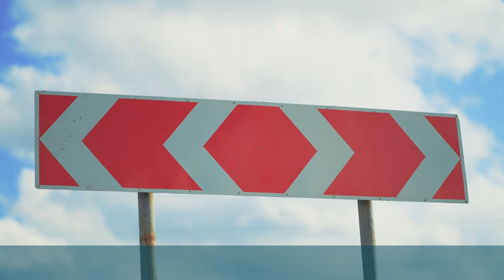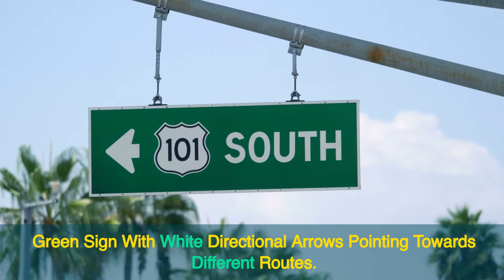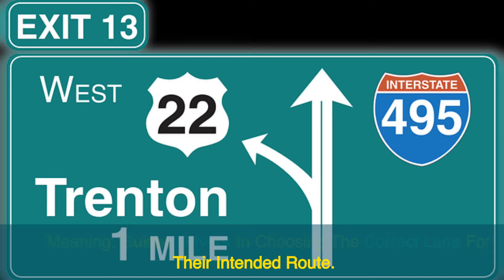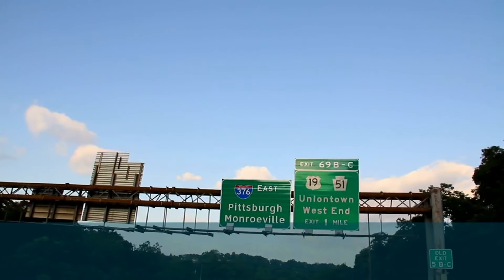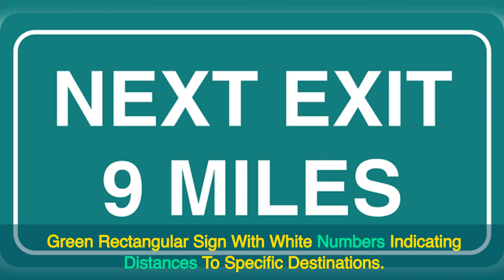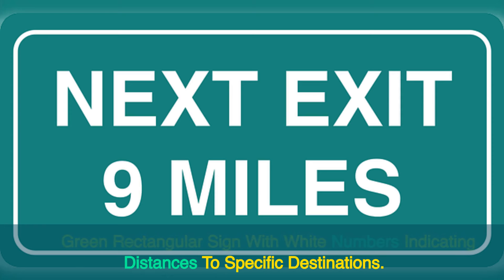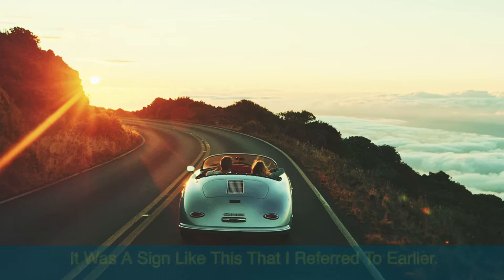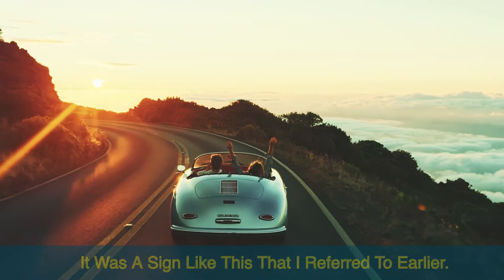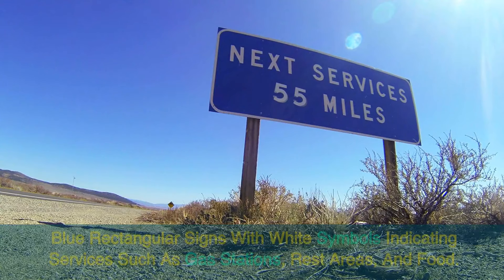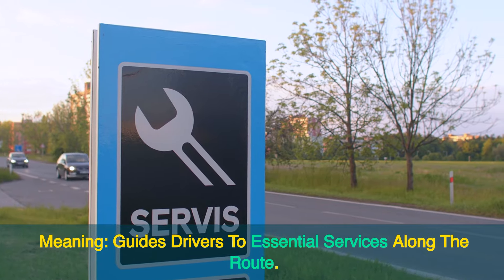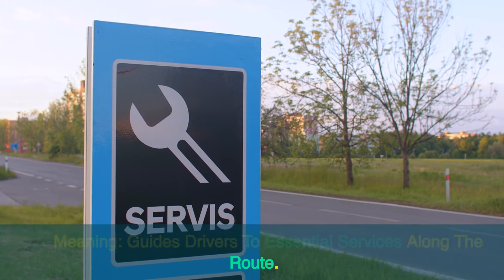Directional arrow sign. A green sign with white directional arrows pointing towards different routes — guides drivers in choosing the correct lane for their intended route. Distance sign. A green rectangular sign with white numbers indicating distances to specific destinations — informs drivers about the distance to upcoming towns or cities. It was a sign like this that I referred to earlier. Service signs. Blue rectangular signs with white symbols indicating services such as gas stations, rest areas, and food — guides drivers to essential services along the route.